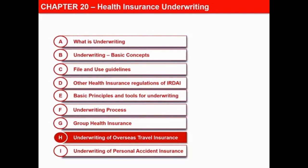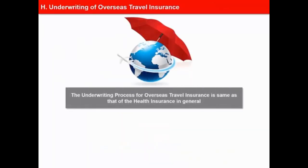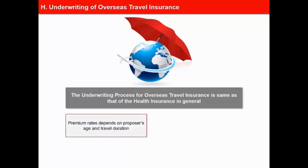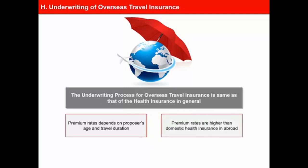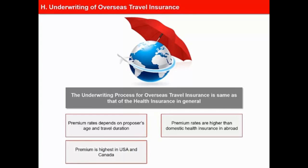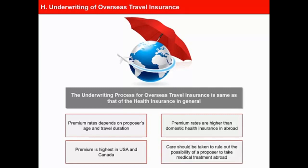The underwriting process for overseas travel insurance is the same as that of the health insurance in general. The premium rating and acceptance will be as per the individual company guidelines, but a few important considerations are as follows. First, premium rate would depend on the age of the proposer and the duration of foreign travel. Second, as medical treatment is costly overseas, the premium rates are normally much higher compared to domestic health insurance policies. Third, premium is highest for USA and Canada. And fourth, care should be taken to rule out the possibility of a proposer using the policy to take medical treatment abroad, and hence the existence of any pre-existing disease must be carefully considered at the proposal stage.